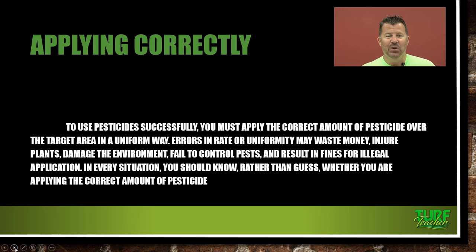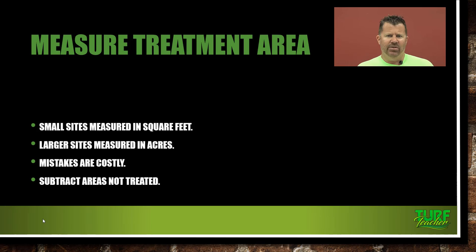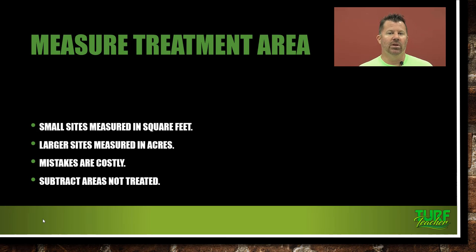How much pesticide do I apply to a property? We've got some math problems you're going to see. Small sites are measured in square feet — your typical residential lawn. You might have a 5,000-square-foot lot with a driveway, sidewalk, and shrub beds that need to be subtracted out. Larger sites are measured in acres, whether it's a golf course, agricultural field, or sod farm.